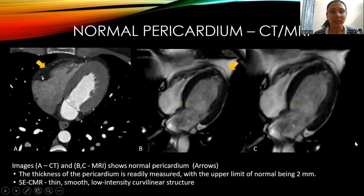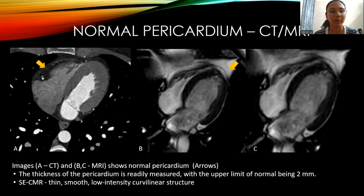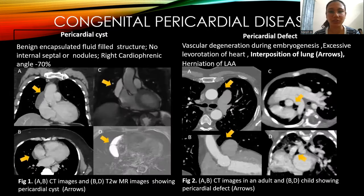Image A (CT) and images B and C (MRI) show normal pericardium. The thickness of the pericardium is readily measured, with the upper limit of normal being 2 mm. Cardiac MRI shows the pericardium as a thin, smooth, low-intensity curvilinear structure.